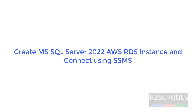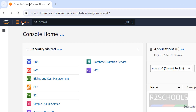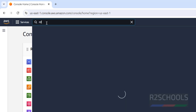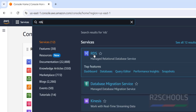In this video we will see how to create a SQL Server 2022 AWS RDS instance and connect to it using SQL Server Management Studio. I have connected to the AWS console — click on Services, then search for RDS and click on the RDS service.